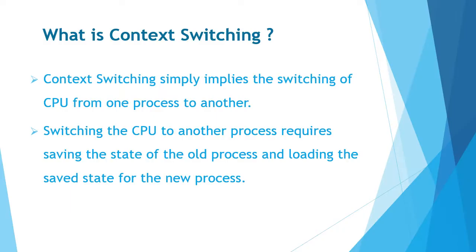What is context switching? Context switching simply implies the switching of the CPU from one process to another. When you switch to another process from another process, that involves context switching.